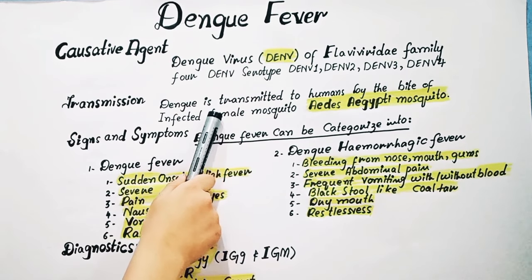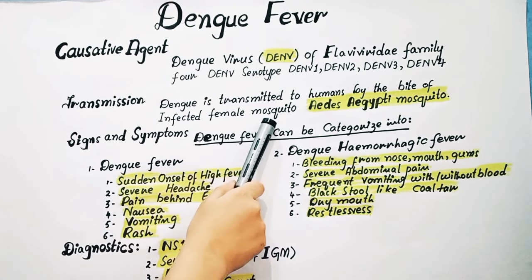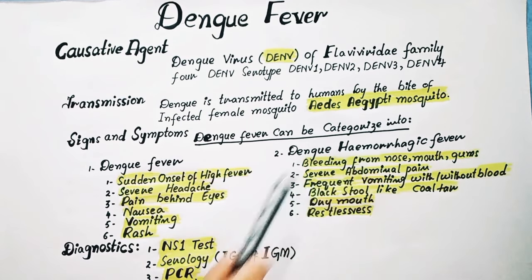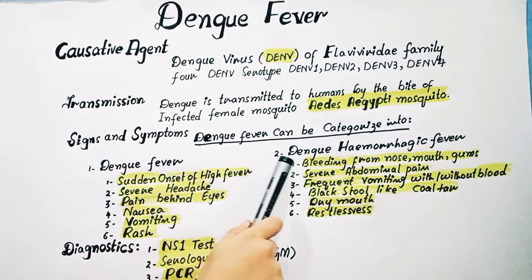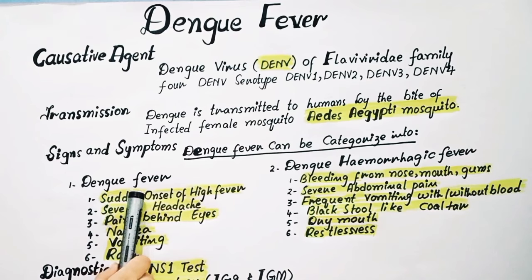The transmission of the dengue virus is through the bite of the infected female mosquito, which is called the Aedes aegypti mosquito. The World Health Organization categorizes dengue fever into two types: mild dengue fever and dengue hemorrhagic fever.